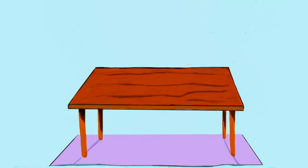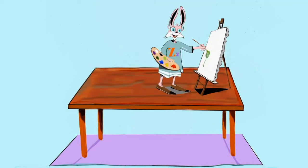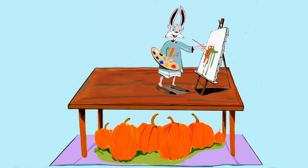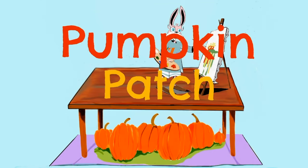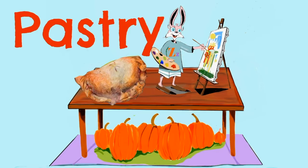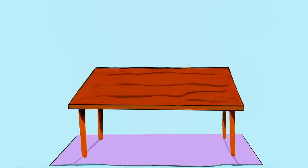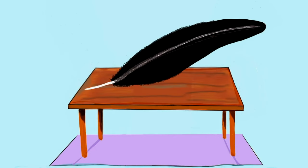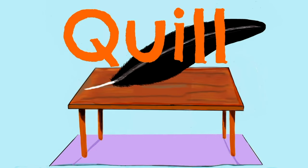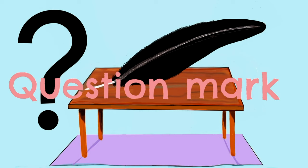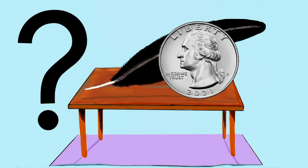Next we have the letter P. Oh, that's me — Zoopy, I'm painting! That's a pumpkin patch and a pastry. My favourite — I love pastries! Next is the letter Q — that's a quill, a question mark, and a quarter.